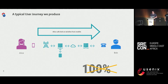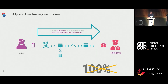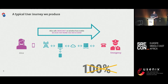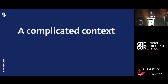No one ever complained about a dropped call while calling his stepmother. But let's make a slight change to the user journey. Now Alice is not calling Bob anymore — she's calling the emergency service. Think for a second: you're with a friend somewhere, there is an accident, and you need to call an ambulance. What is the reliability you expect from such a user journey? How many emergency calls can we lose per month? What percentage of those calls can be dropped, knowing it may have life or death consequences? That's the kind of context we are in as a company.